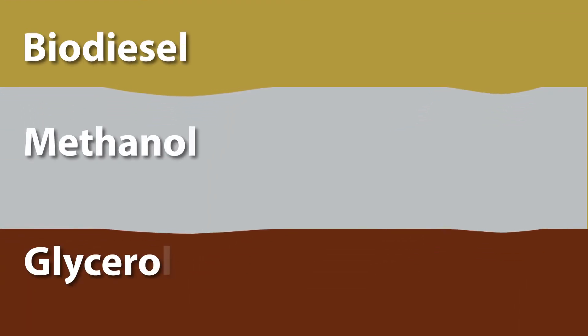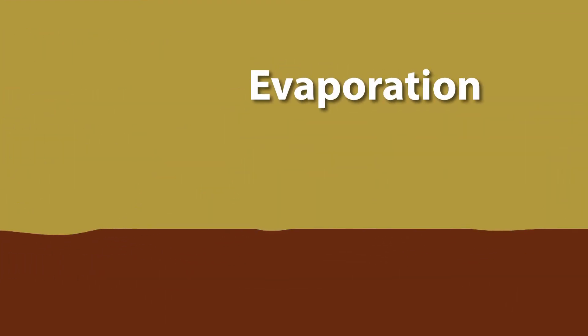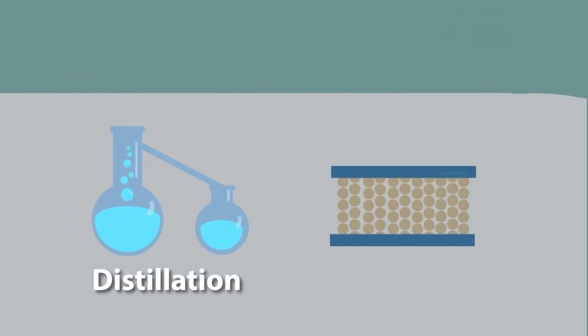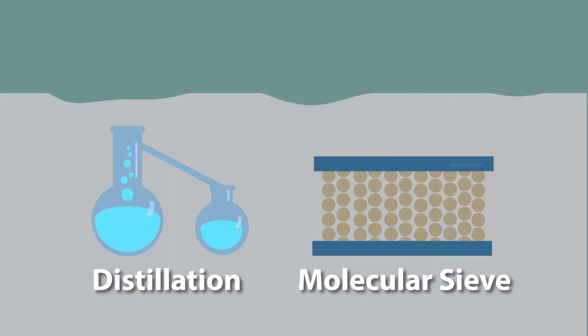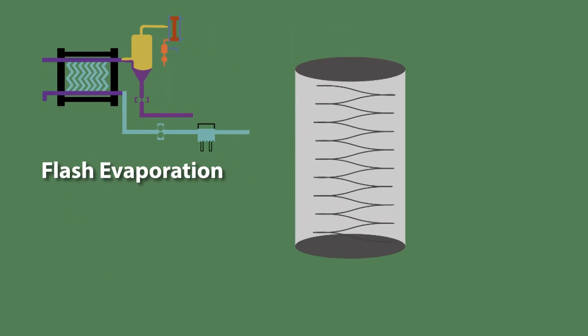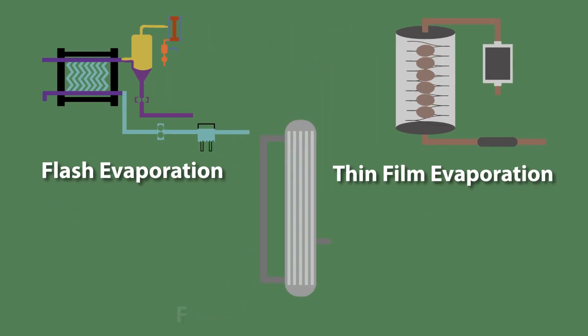The process of removing methanol from the biodiesel and glycerol can be done by evaporation, but the recovered methanol is wet and must be further refined by distillation or dried by molecular sieve in order to recycle it back into the biodiesel production process. There are several evaporation methods, including flash evaporation, thin film evaporation, and falling film evaporation.